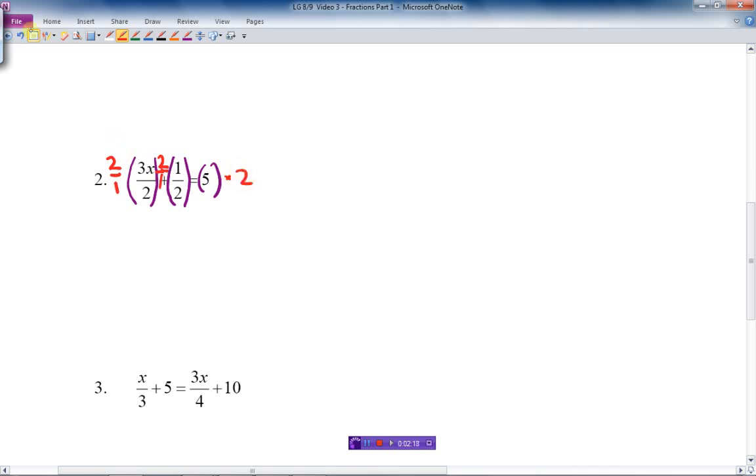Now the reason we do that is so that we can cancel out the 2 in the bottom with the number we're multiplying by. 2 goes into 2 one time, 1 times 3x is just 3x. 2 goes into 2 one time, 1 times 1 is 1. There's a plus 1 there, equals 5 times 2. Nothing can cancel out because there's no denominator. 5 times 2 is 10.